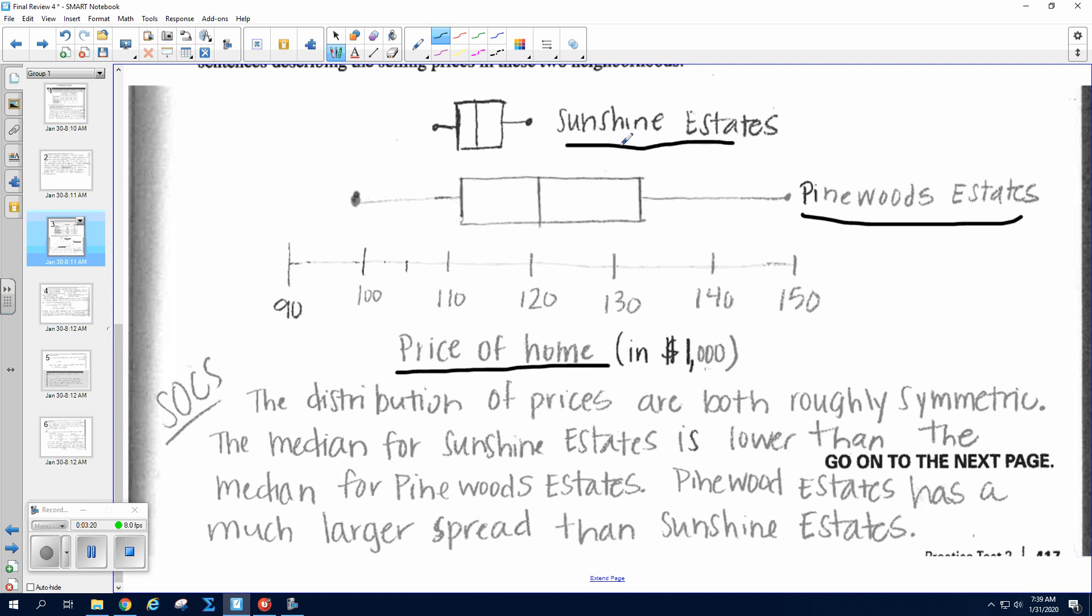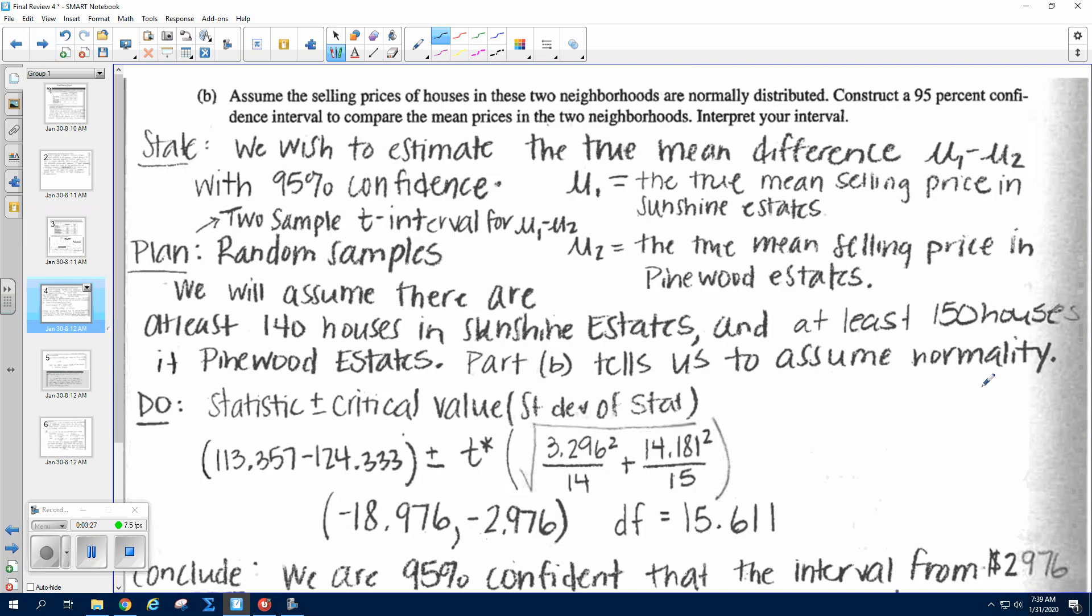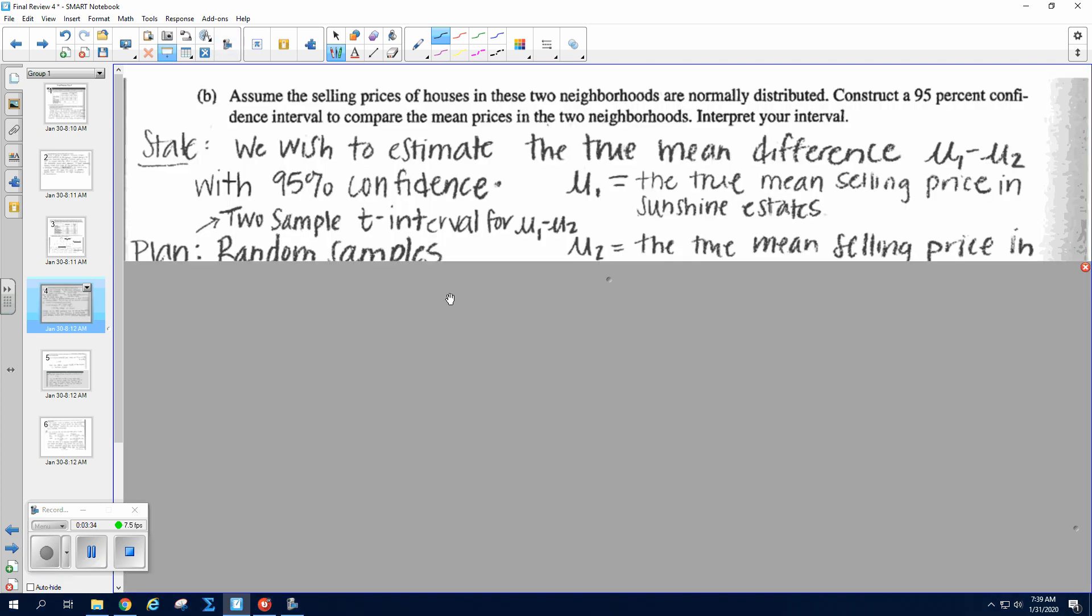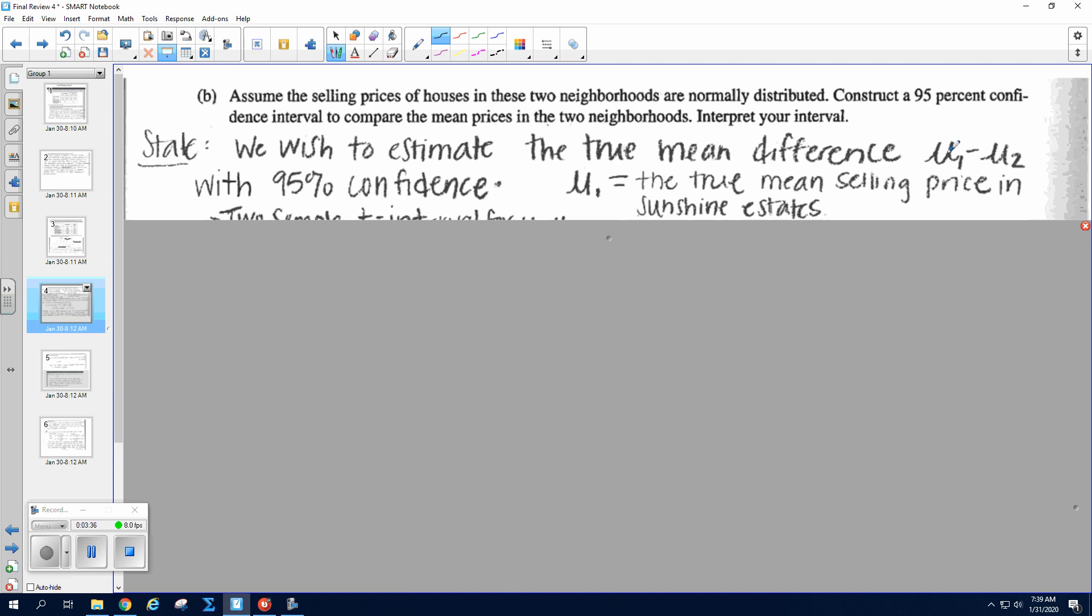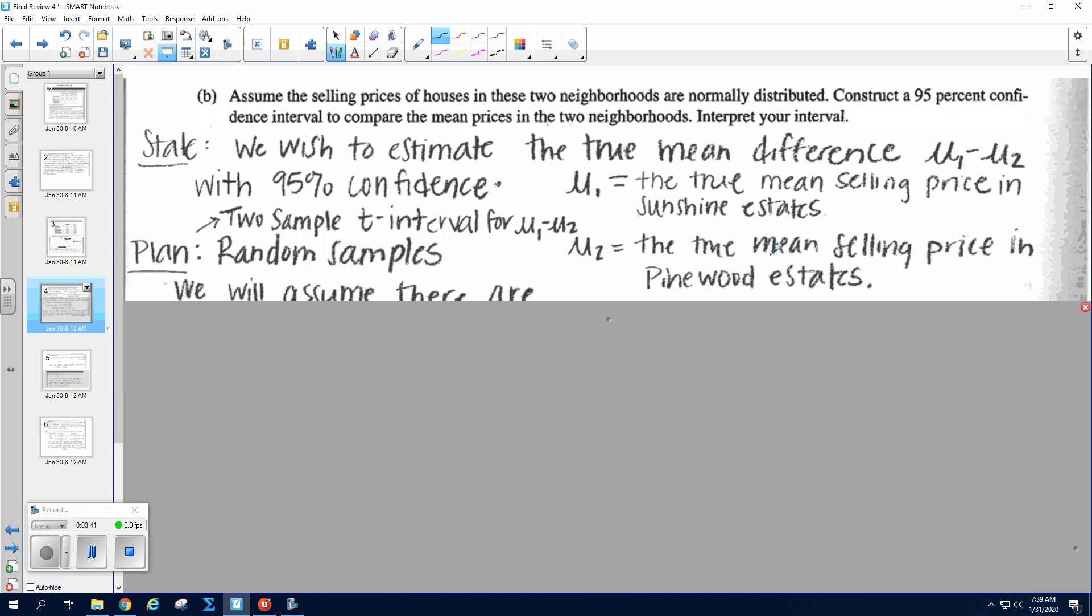Okay, now we're doing a confidence interval. There are two sets of data, so we wish to estimate the true mean difference μ₁ minus μ₂ with 95% confidence. And you have to say which is μ₁ and which is μ₂. So μ₁ I decided would be the true mean selling price in Sunshine Estates, and μ₂ is the true mean selling price in Pinewood Estates.